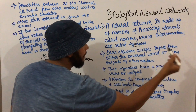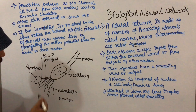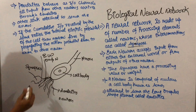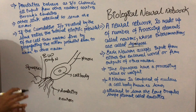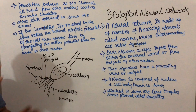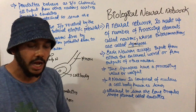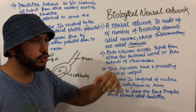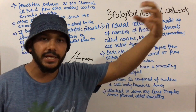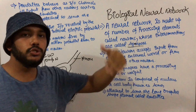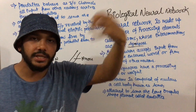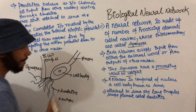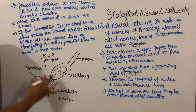These synapses have a processing value or weight. When information is being passed between different neurons, these synapses will have some weight or processing value. For example, they process how much pain is in the tip of my finger, and then pass it to the dendrites. Through the dendrites it is presented to the soma, and then through the soma it can be passed to the axon. So synapses have a processing value or weight.